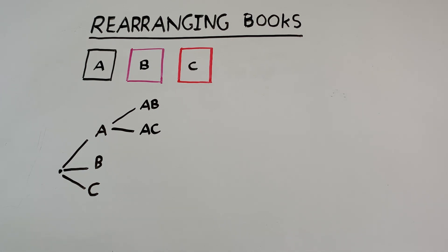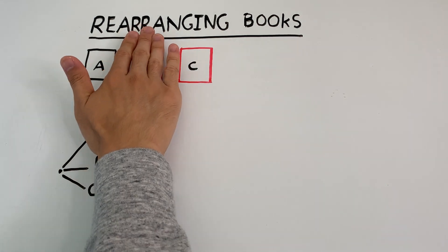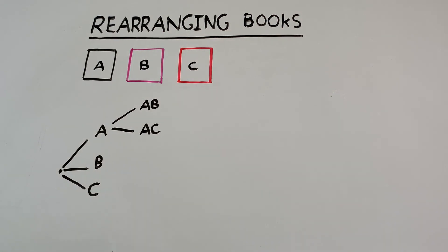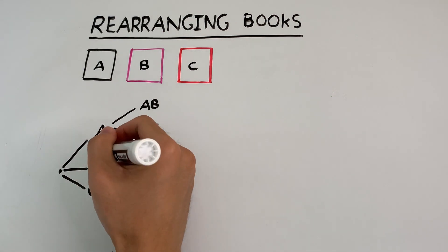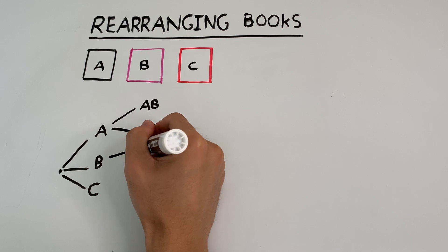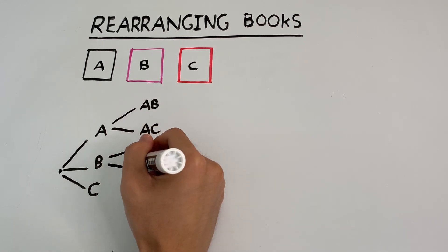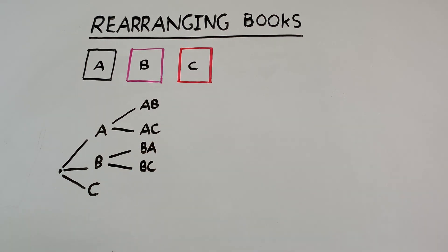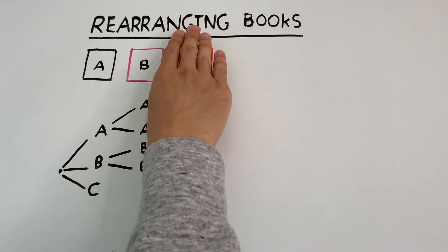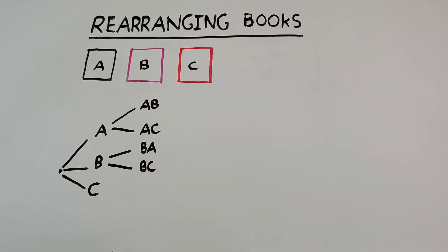If book B was the first book placed, then that leaves A or C to go next. And finally, if book C was placed first, that leaves A or B to be placed after.